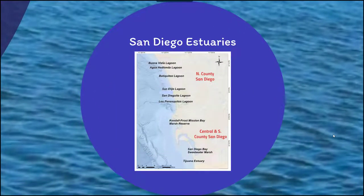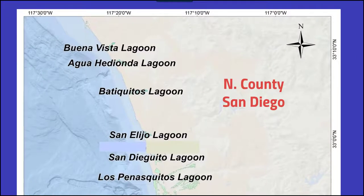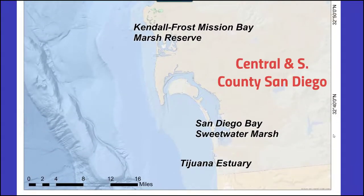San Diego is home to several different estuaries. In North County, we find a series of different lagoons along the coast. These lagoons have been whittled down through development and other anthropogenic influences, though they are protected lands. In the southern part of San Diego County, we have the Kendall Frost Mission Bay Marsh Reserve, the San Diego Bay Sweetwater Marsh, and the Tijuana Estuary.